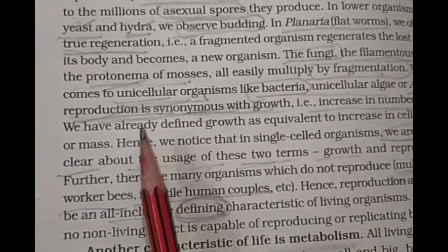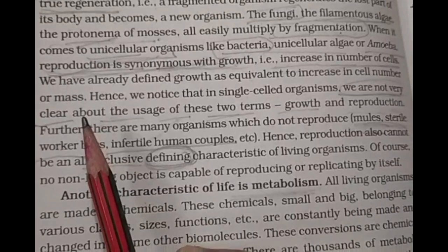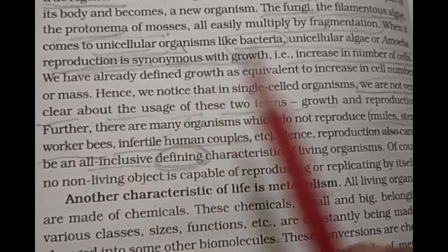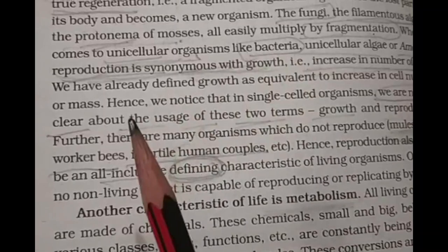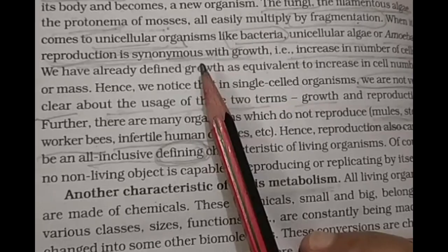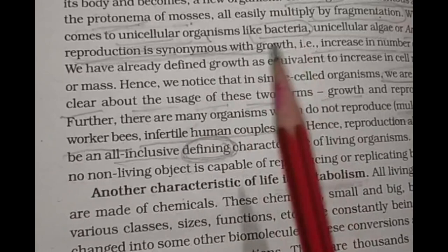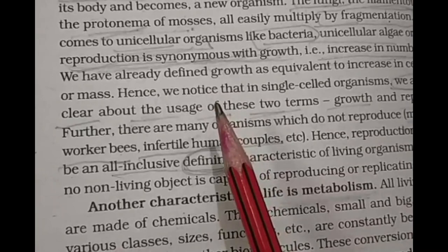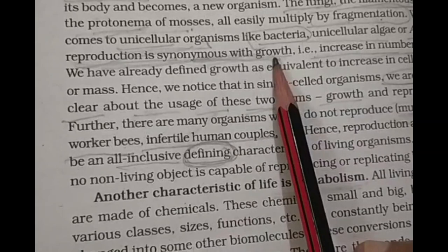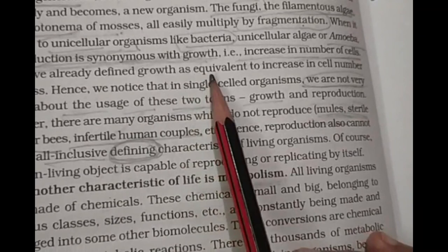In unicellular organisms, reproduction is synonymous with growth, meaning an increase in number of cells. When one parent cell divides into two daughter cells, the number of cells increases — that is growth. Simultaneously, the parent is reproducing its daughter cells. So for unicellular organisms which are only one cell, growth and reproduction have the same meaning.